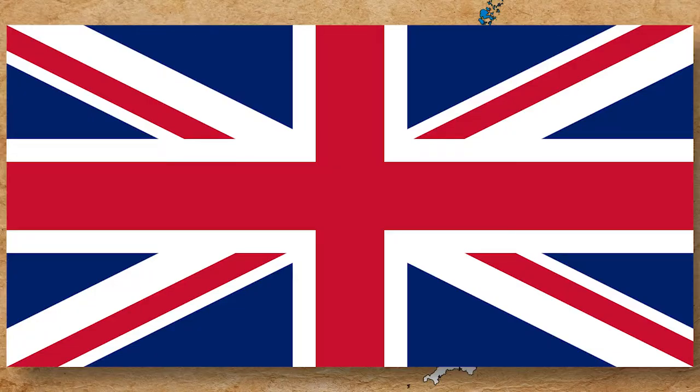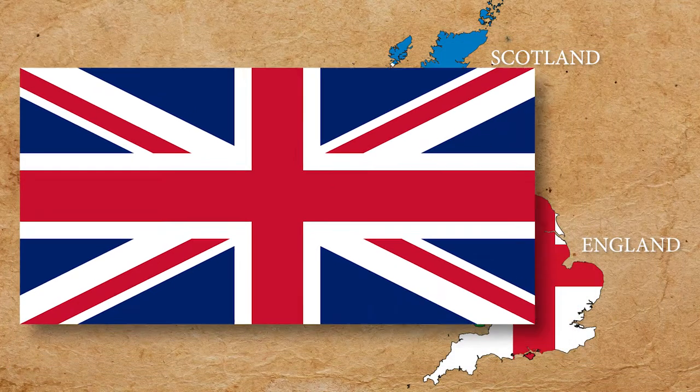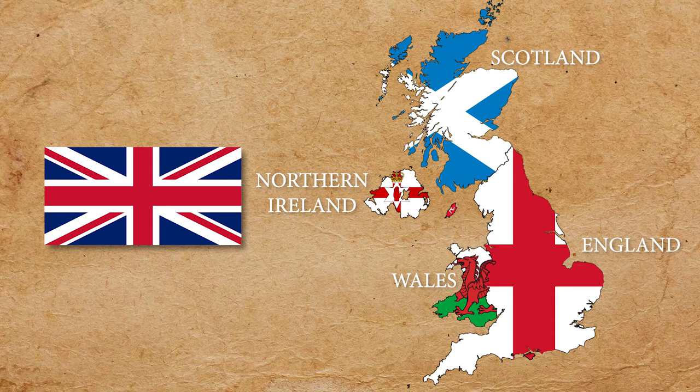The Union Jack has been through quite a lot in the past 400 years. The Union flag is meant to do just that — unify several nations together under one flag. The United Kingdom is a union of four nations: England, Wales, Scotland and Northern Ireland. Each of which, except Wales, is represented in the flag.